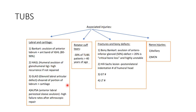The ALPSA lesion — anterior labral periosteal sleeve avulsion — is basically where the labrum is avulsed and then moves medially to the glenoid, healing on the medial side. This will cause reduced external rotation later. The bony Bankart is a fracture through the glenoid.